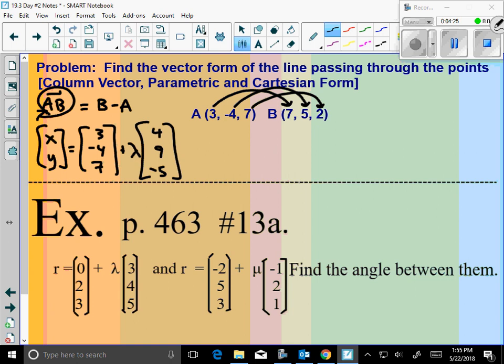Now let's take that to parametric. Pretty easy representation. We just take out all of the matrix language. And then we distribute lambda to that direction vector. So I'd have 3 plus 4 lambda, I'd have negative 4 plus 9 lambda, and 7 minus 5 lambda. There's parametric form.